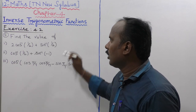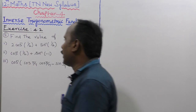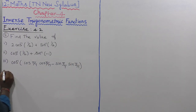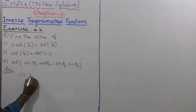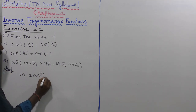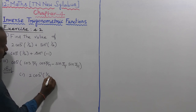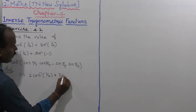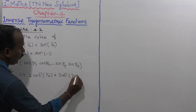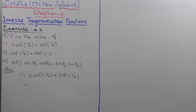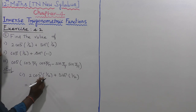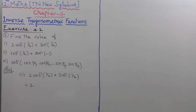The last subdivision is completed. Going to the first subdivision now. Solution — the first subdivision: 2 into cos inverse of 1 by 2 plus sin inverse of 1 by 2. So cos inverse of 1 by 2 and sin inverse of 1 by 2.